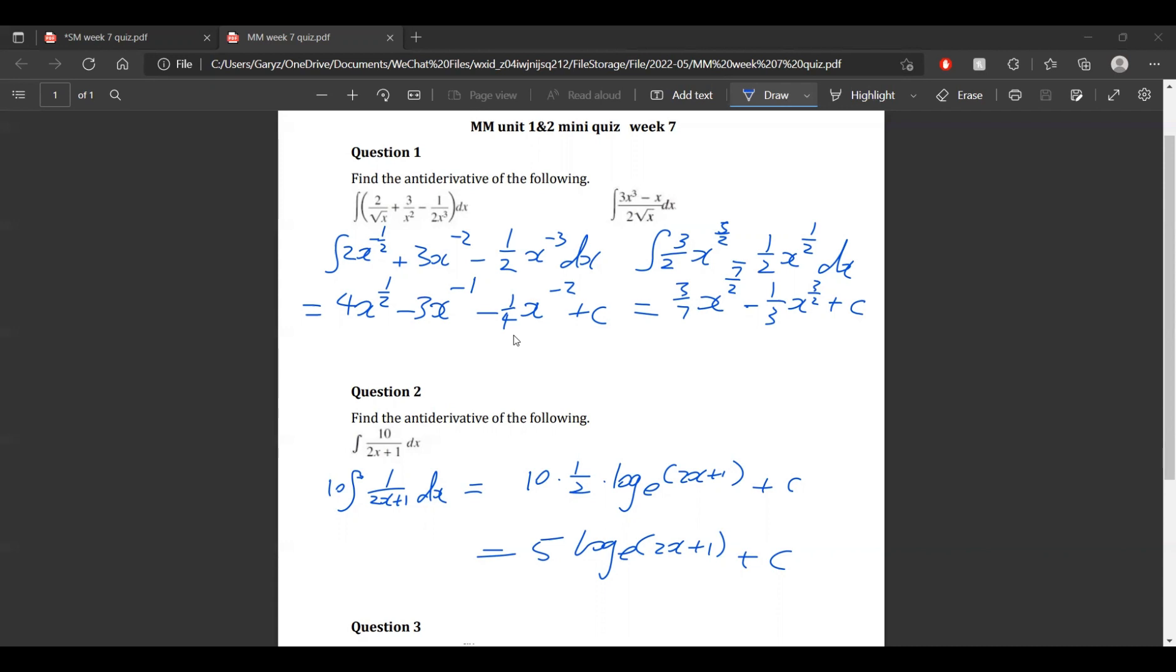For example, 3 on 2 x to the power of 5 on 2. 5 on 2 plus 1 is 7 on 2. And to get the term at the front we just think what term times 7 on 2 is 3 on 2, and that term is 3 on 7. And just as I said again, don't forget plus c at the end.